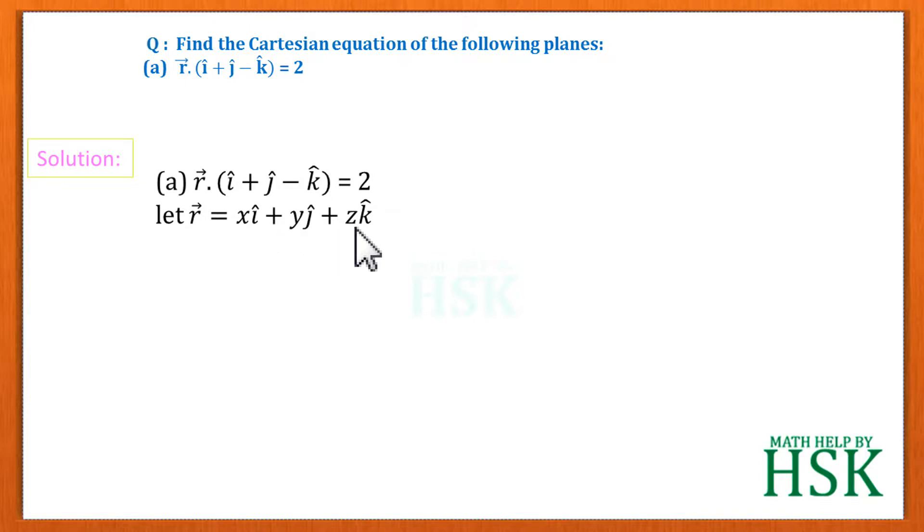Next, we are going to place this value in this equation of the given plane. So we are going to get the expression like this and we can easily take the dot product of these two brackets. Actually these brackets represent two vectors so we can easily take the dot product of these two vectors.